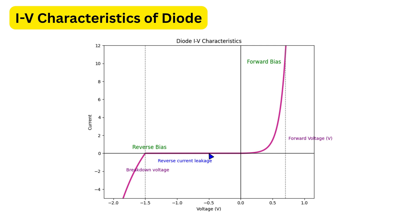This graph shows how current I changes with applied voltage V. In forward bias, as the voltage increases slowly, current remains very small until the voltage crosses a certain threshold or the barrier voltage. After that, current rises rapidly with even a small increase in voltage.